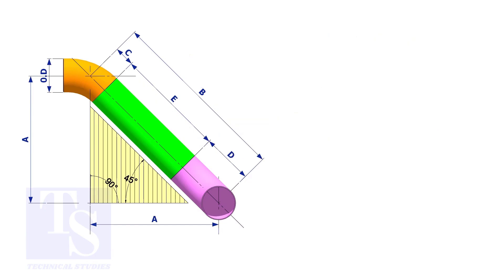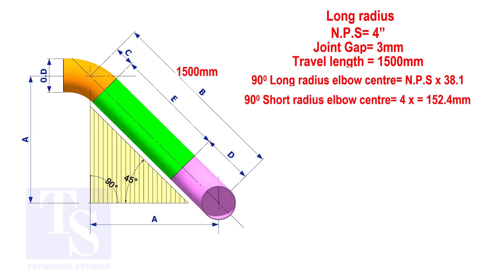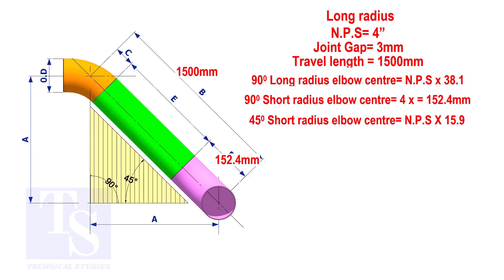Assume that the elbows are long radius. Calculate the true length of the pipe. The elbow center is the nominal pipe size multiplied by 38.1, so the elbow center of the 90 degree elbow is 152.4 millimeters. To calculate the elbow center of a 45 degree long radius elbow, multiply the nominal pipe size by 15.9. The answer is 63.6 millimeters.